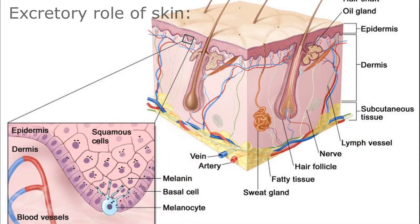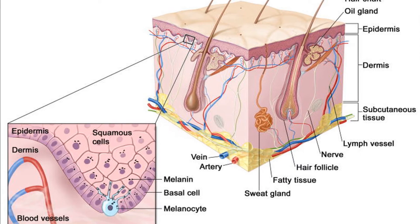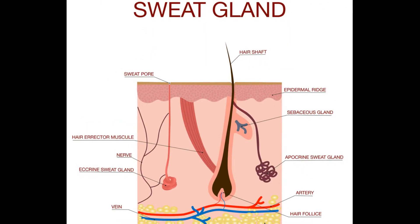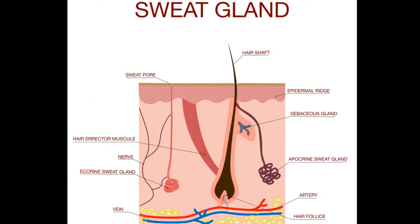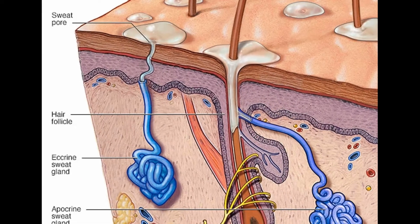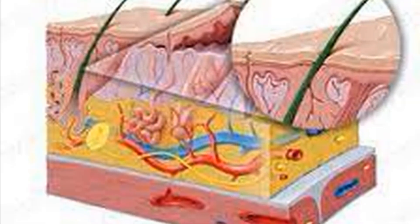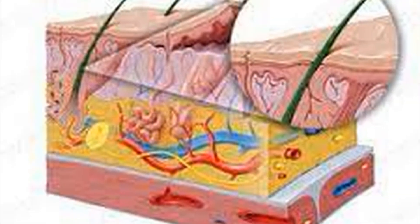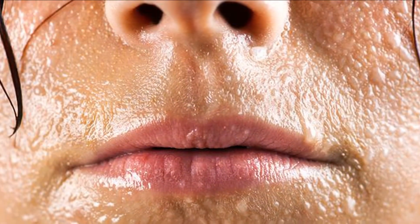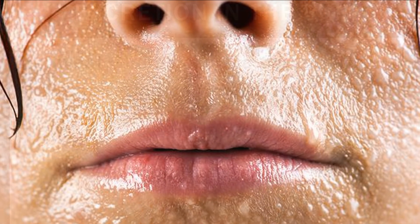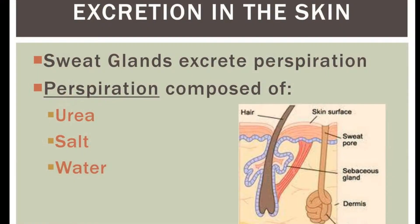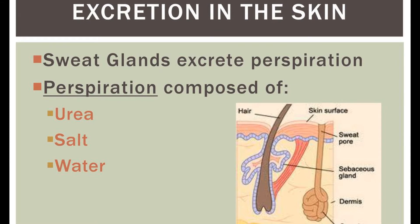Excretory role of skin: The major excretory function of the skin is the production of sweat, which on evaporation from the surface of the skin causes cooling. Sweat is secreted by sweat glands located underneath the skin. These glands have ducts which open on the surface of the skin, through which sweat comes out of the body. Sweat is composed of excess water, salts and traces of urea and uric acid.